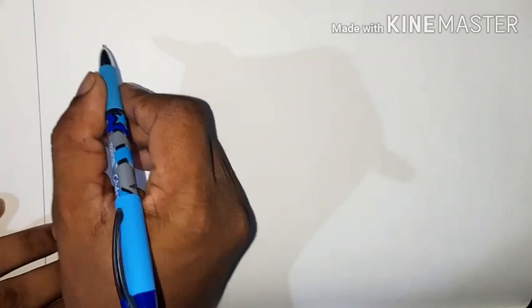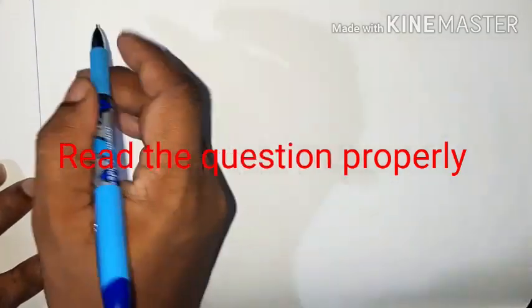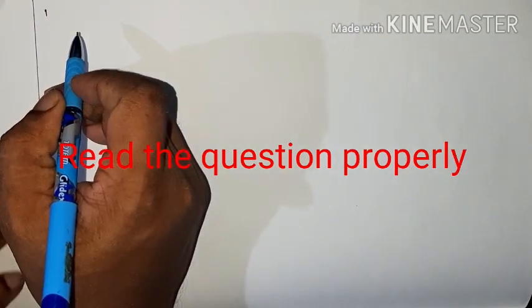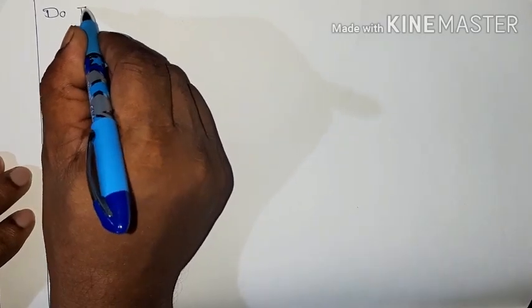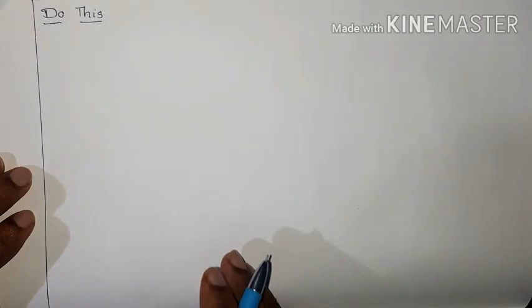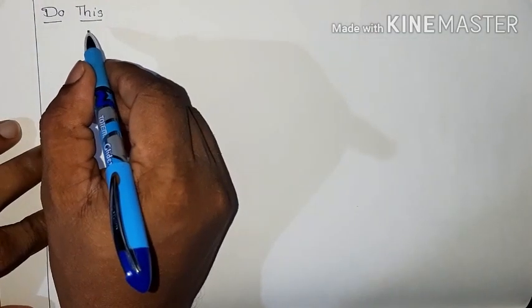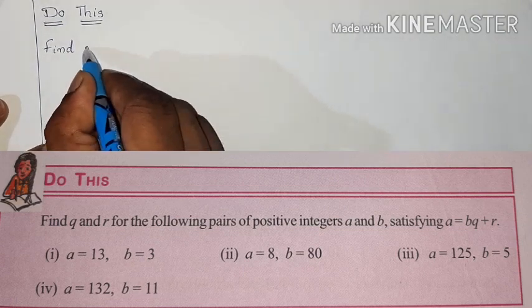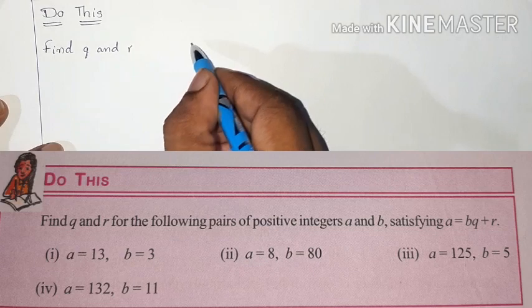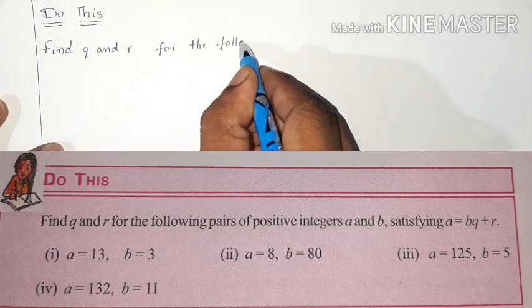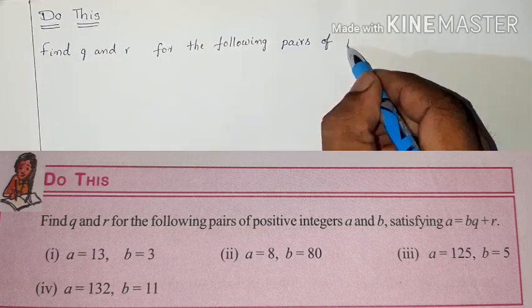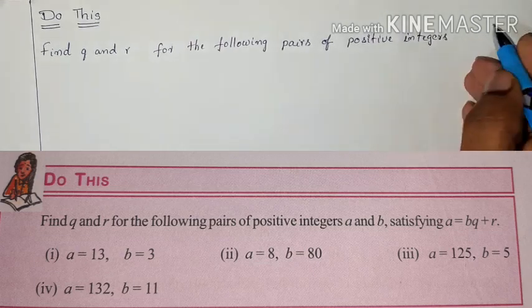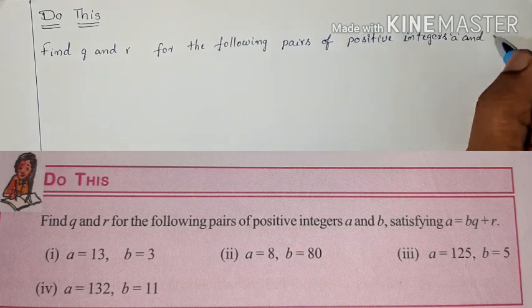Let us solve these problems. The condition is very important: A is equal to BQ plus R. We need to find Q and R satisfying this condition for each pair of positive integers.